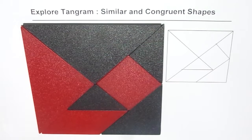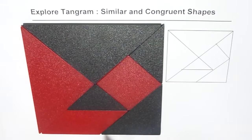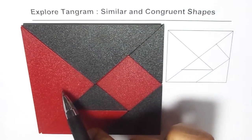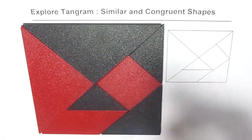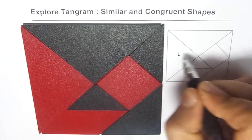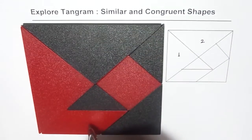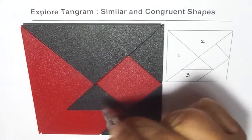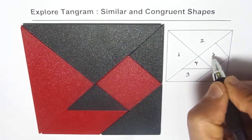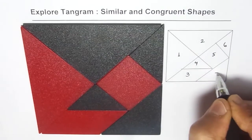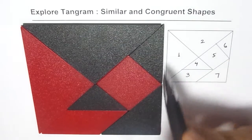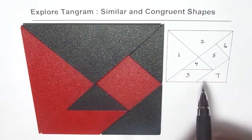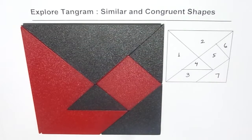As you know, one tangram has seven pieces. So let me number them. This big triangle I am numbering as one and that one as two. Let us start numbering them as one, two, three, four, five, six and seven. So that becomes a diagram which represents our tangram.